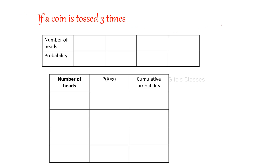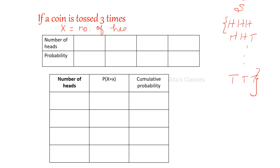If a coin is tossed three times — as explained in the previous class — the sample space includes outcomes from HHH up to TTT. Defining the random variable capital X as the number of heads, X can take values 0, 1, 2, or 3. The corresponding probabilities are: P(X=0) = 1/8, P(X=1) = 3/8, P(X=2) = 3/8, and P(X=3) = 1/8.